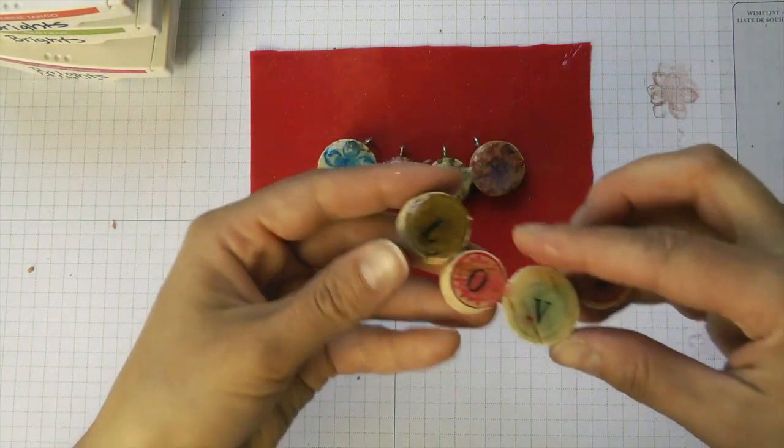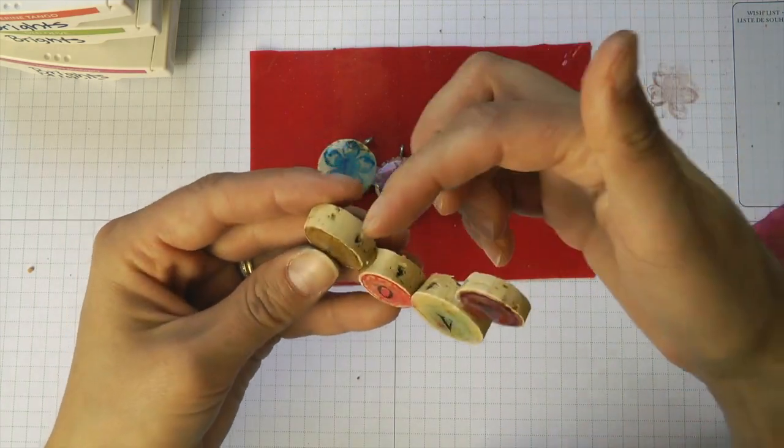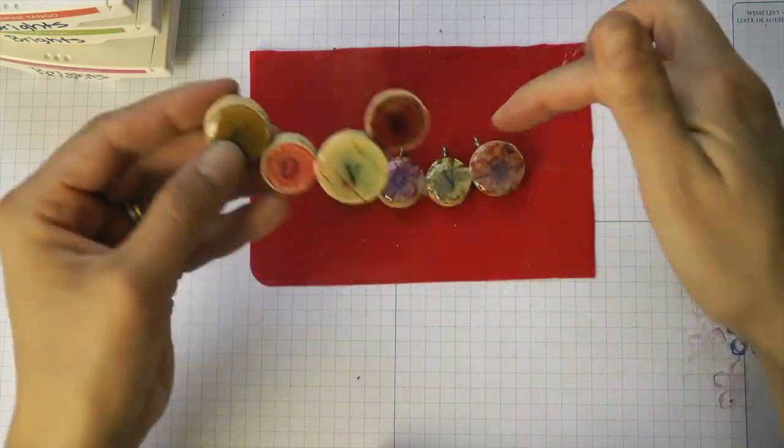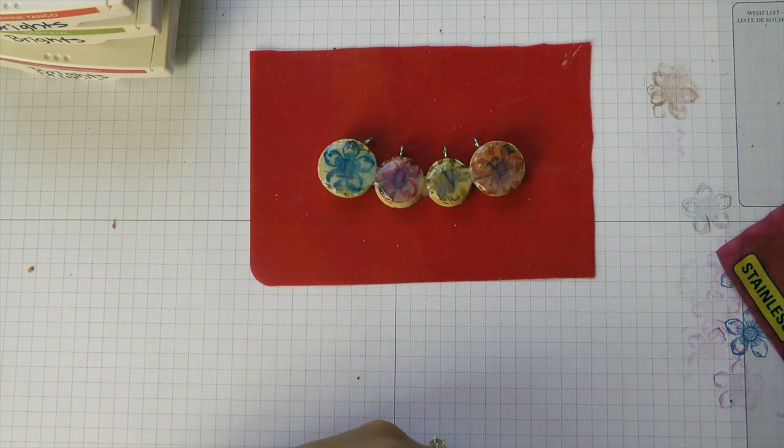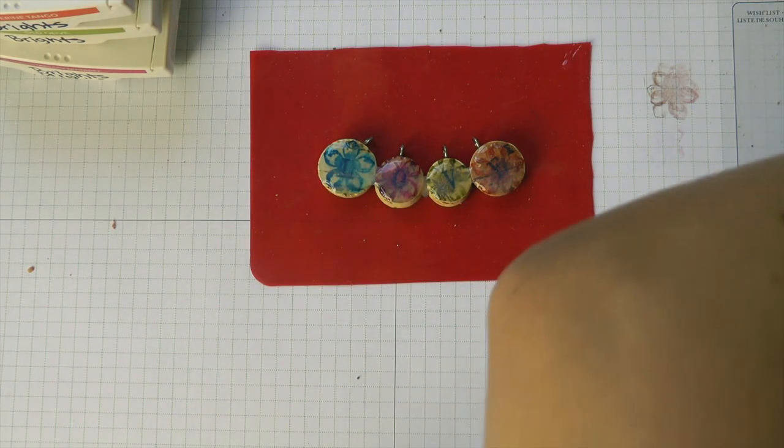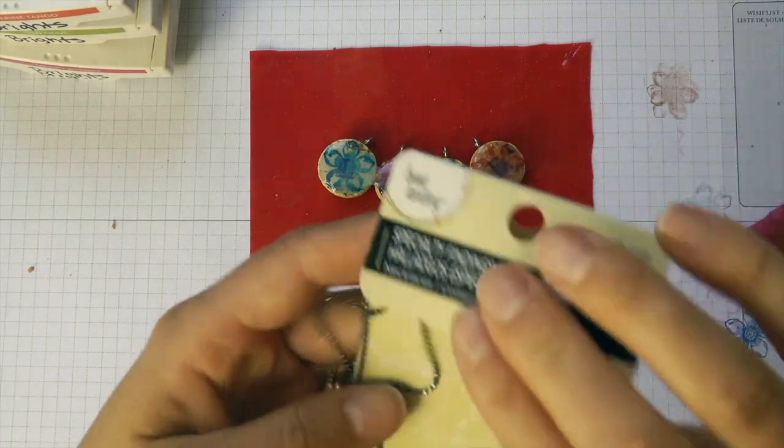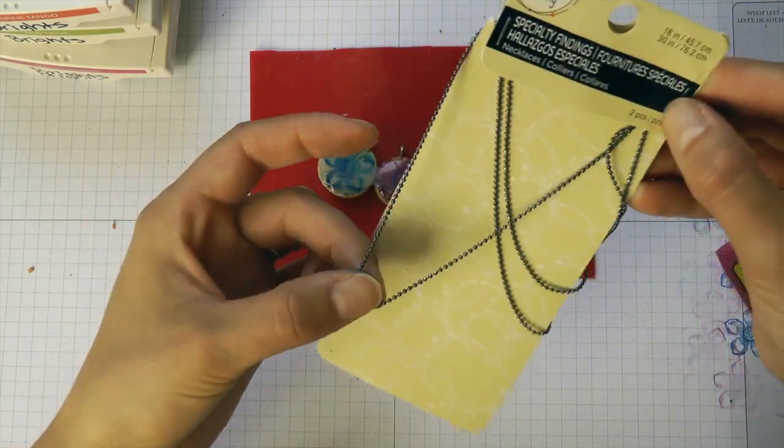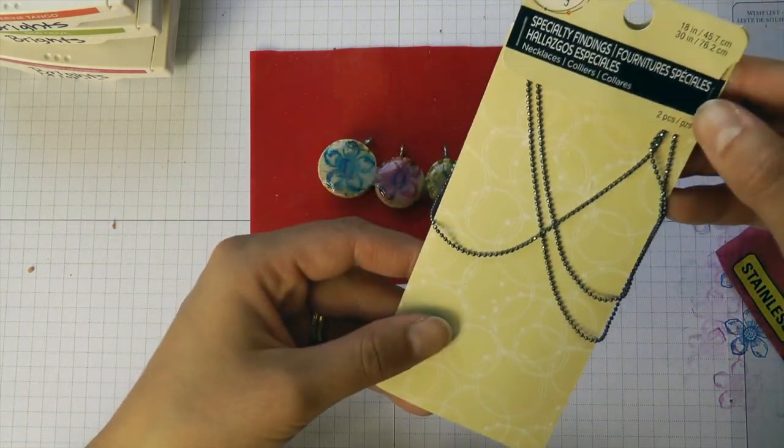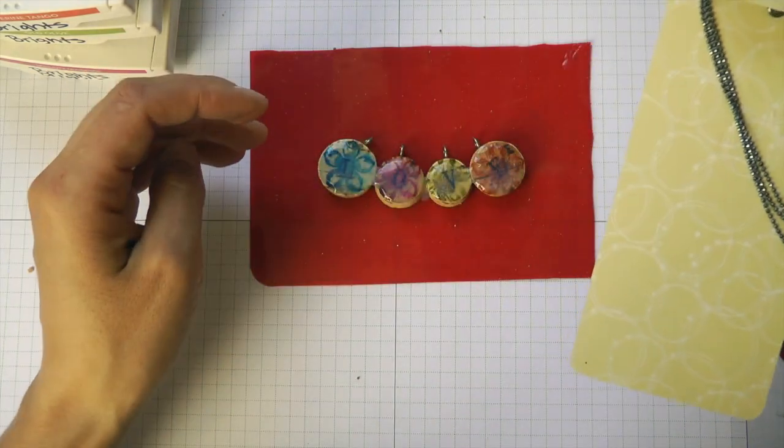When it dries, it will look like this. Isn't that so fun? Only it will already have these eyelets in them. So that's going to dry. I have a chain here. I just got these also from Michael's. I just used any old chain. This one is 18 inches long, and it looks so fun.